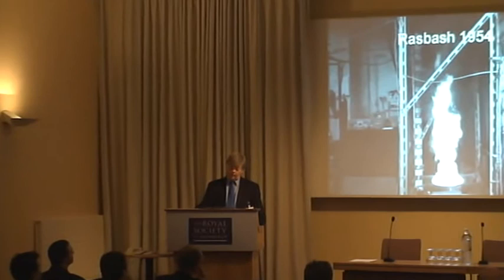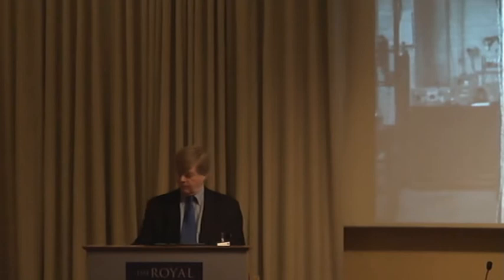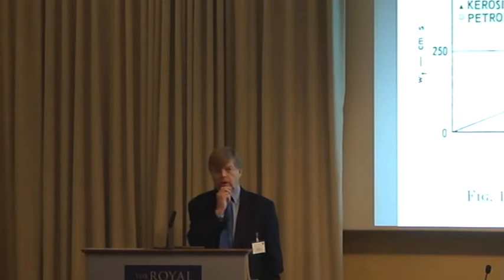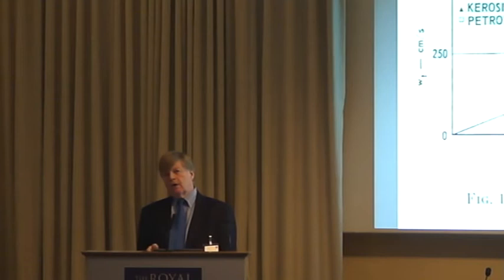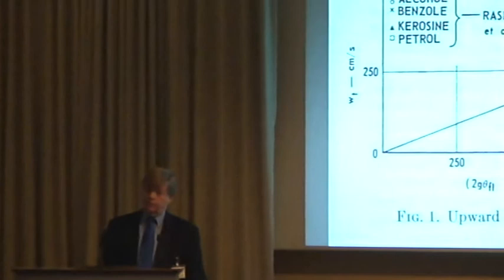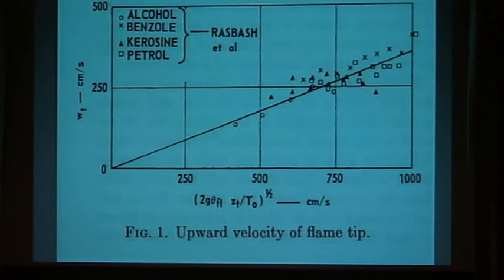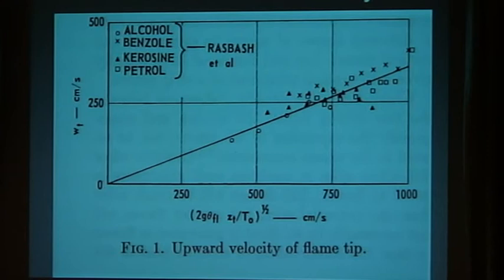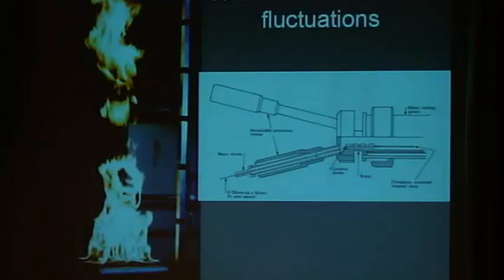Razbash, again — it was 1954 — did cinephotography of these flames, measuring the velocity of the flame tips, and he presented his work in the form of regression equations. Philip, looking at those relationships, realised that the velocity of the flame tips must be related to the acceleration of a parcel of gas at flame temperature accelerating vertically. By plotting the data that Razbash developed — vertical axis is velocity, horizontal axis is that theoretical velocity — he shows that the velocity is indeed proportional to that acceleration velocity.